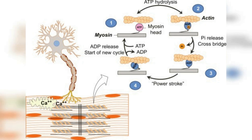In conclusion, understanding muscle physiology and the process of muscle contraction is important for comprehending movement and overall physical function. The steps involved in muscle contraction, including depolarization, calcium release, actin-myosin binding, and sarcomere contraction, are essential to this process. Additionally, the role of the neuromuscular junction and acetylcholine cannot be overstated. By understanding the intricacies of muscle contraction, we can better appreciate the complexity of our bodies and the importance of proper muscle function for overall health and well-being.